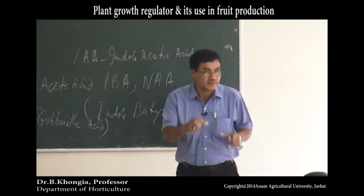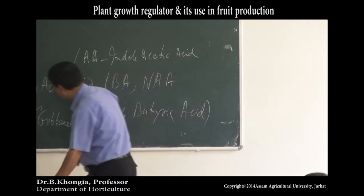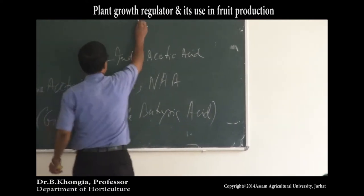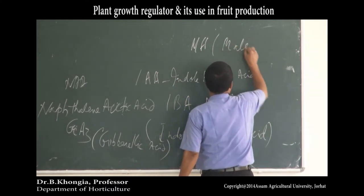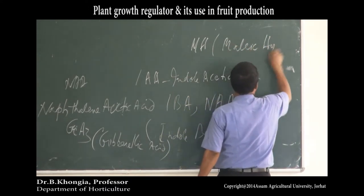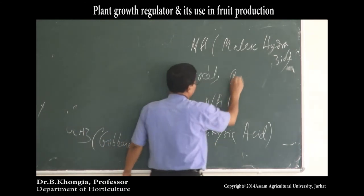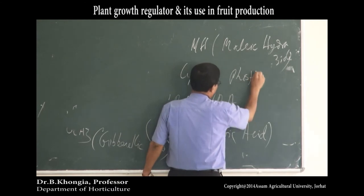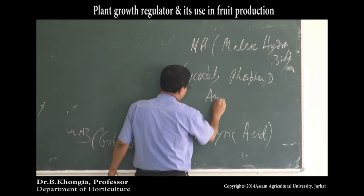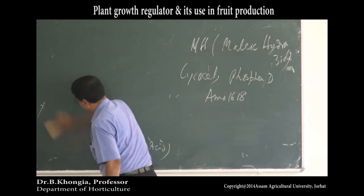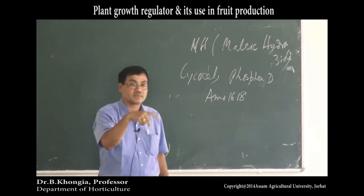There are also substances that retard or inhibit growth, such as malic hydrazide (M-A-L-I-C hydrazide), Cycocel, Phosphon-D, and MO-1618. These are the chemical growth regulators which suppress or retard growth.